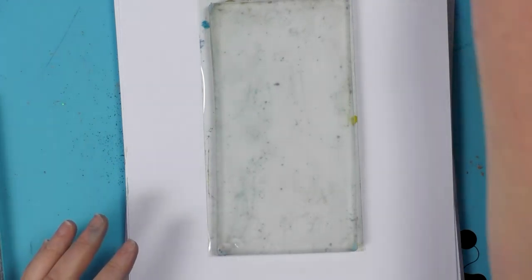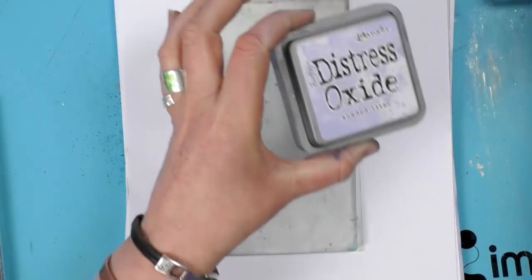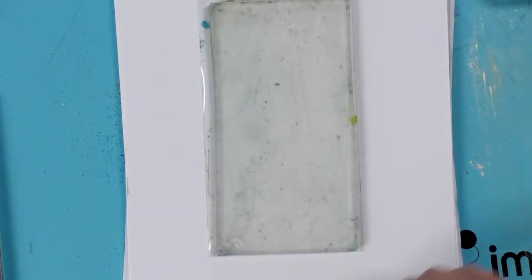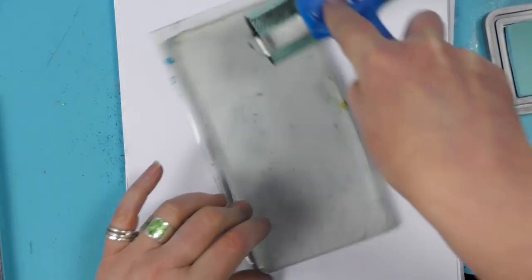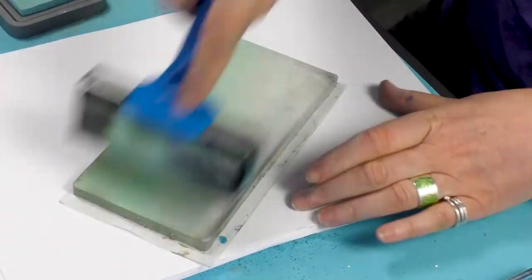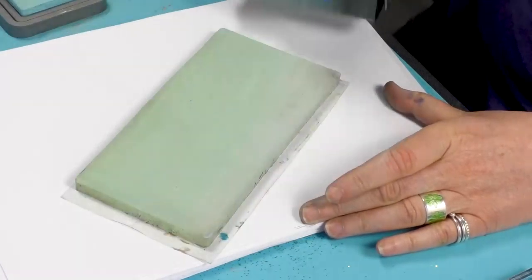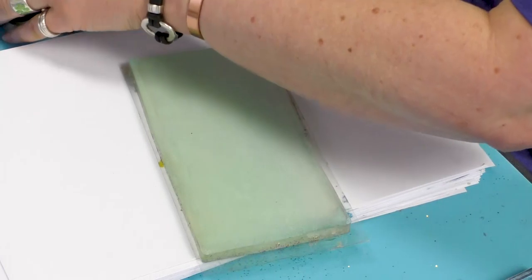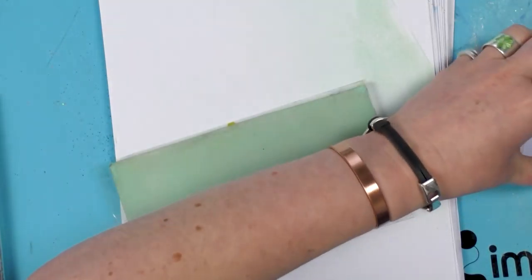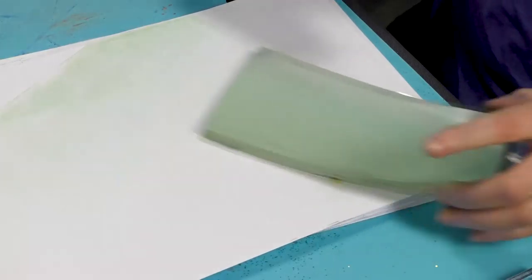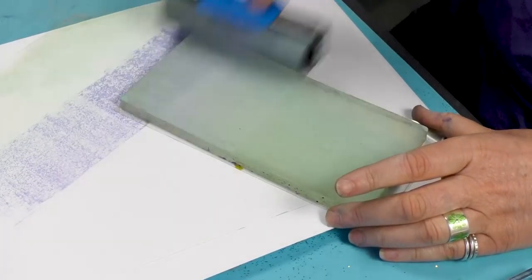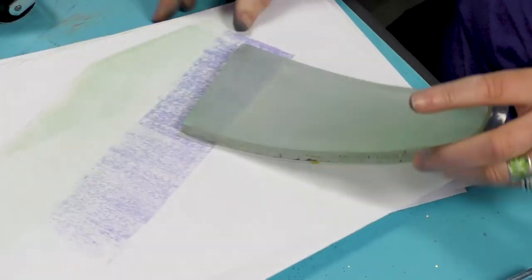We've got our brayer here and we've got distress oxide tumble glass and shaded lilac. So I'm going to use both of those initially on our background. I'm just going to cover that, and then just run off any excess, and then moving on to the shaded lilac. Take a little off.